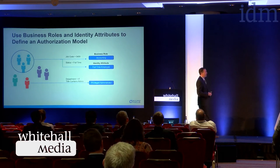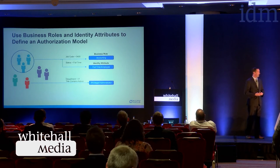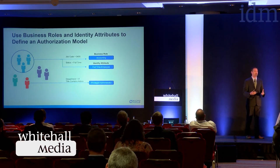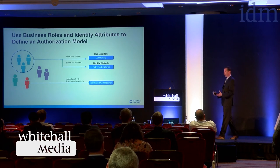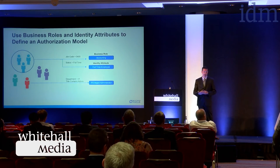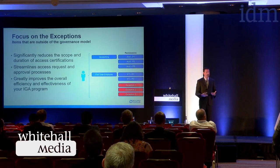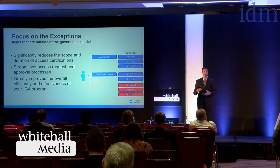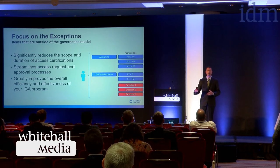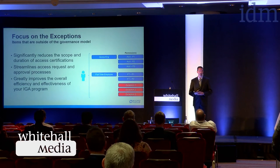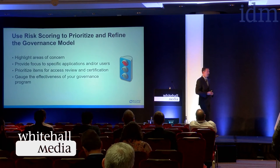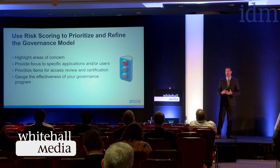Beyond job codes and titles, consider attributes like whether an employee is full-time or part-time, works business hours or after hours, is a traveling employee or office-based. Those attributes help focus on exceptions to the rule, improving efficiency. During access requests, we can automate approval for things normal for that role, but question exceptions. Risk scoring using a red-amber-green approach lets us prioritize access reviews — put highest-risk items at the top of certification lists, informed by sensitive asset types or risky user behavior.